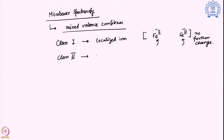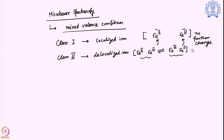Then there is Class 2, which shows delocalization — meaning if you have iron 2+ and iron 3+, they exchange an electron: iron 2+ becomes iron 3+ by losing one electron and the iron 3+ center becomes iron 2+ by taking one electron. So there are two different setups possible and there is mixing of charge, but the ions are actually distinguishable — I can still find which one is iron 3+ and which is iron 2+ by various spectroscopic measurements.